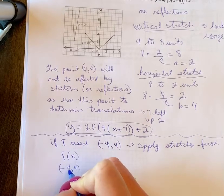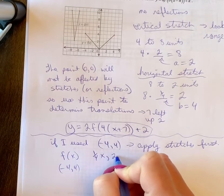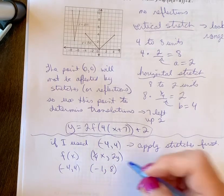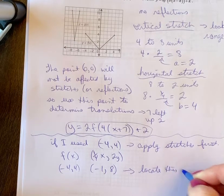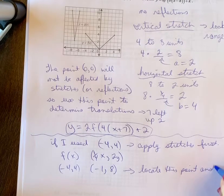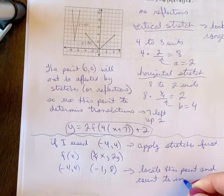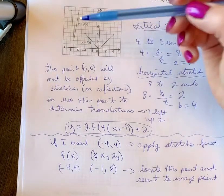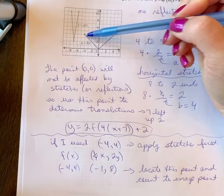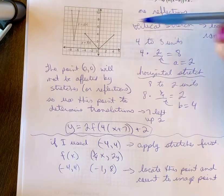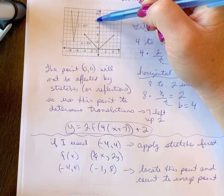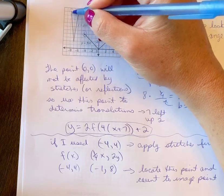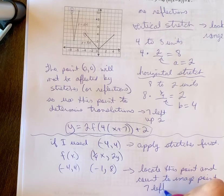So on my f of x graph, we have negative 4 and 4. On my new graph, I'd have 1 quarter times the x and 2 times the y. So I'd have the point negative 1 and 8. So I would locate this point and count to the image point. So my point right here, if I apply the stretches becomes negative 1 and 8. So negative 1 and 8 is right here. So now I'm trying to get to this point right here. These are image points. So I count now 1, 2, 3, 4, 5, 6, 7 and up 2. And you'll see that it is still 7 left and up 2.